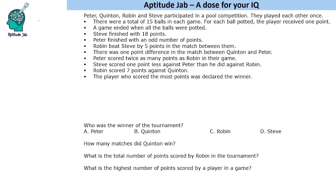Since there are four people, there will be six matches — 4C2 equals six matches in total. The match combinations are: Peter vs Quinton, Peter vs Robin, Peter vs Steve, Quinton vs Robin, Quinton vs Steve, and Robin vs Steve. We will find the score lines of these matches and then answer the questions.